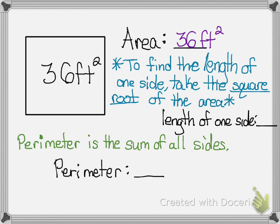I'm given a square that says 36 feet squared. That automatically is my area. To find the length of one side all you do is take the square root of the area. So the square root of 36 equals 6. So that means the length of one side of this square is going to be 6.